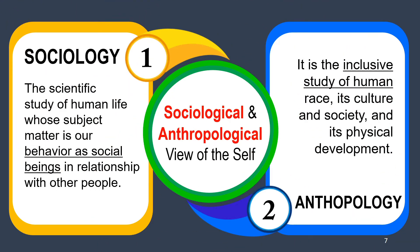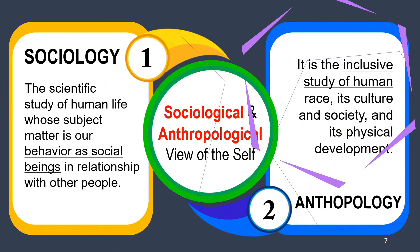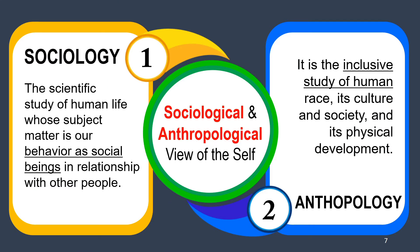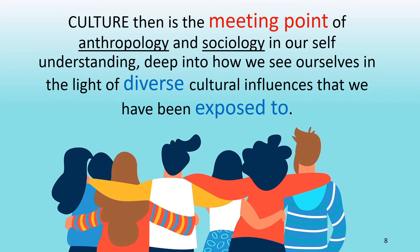Sociology focuses on the social aspect — how man behaves in his interactions with other people — while anthropology takes a wider and more generic scope, which is why it is called an inclusive study. Both deal with the formation of societies and their culture. Culture, then, is the meeting point of anthropology and sociology in our self-understanding.